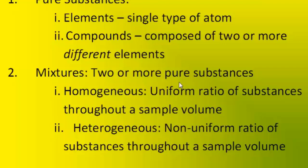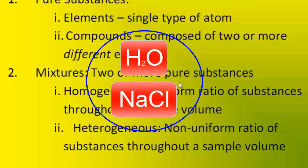For example, a homogeneous mixture would be salt water. Assuming all of the salt is dissolved, the two pure substances in salt water are water and sodium chloride.